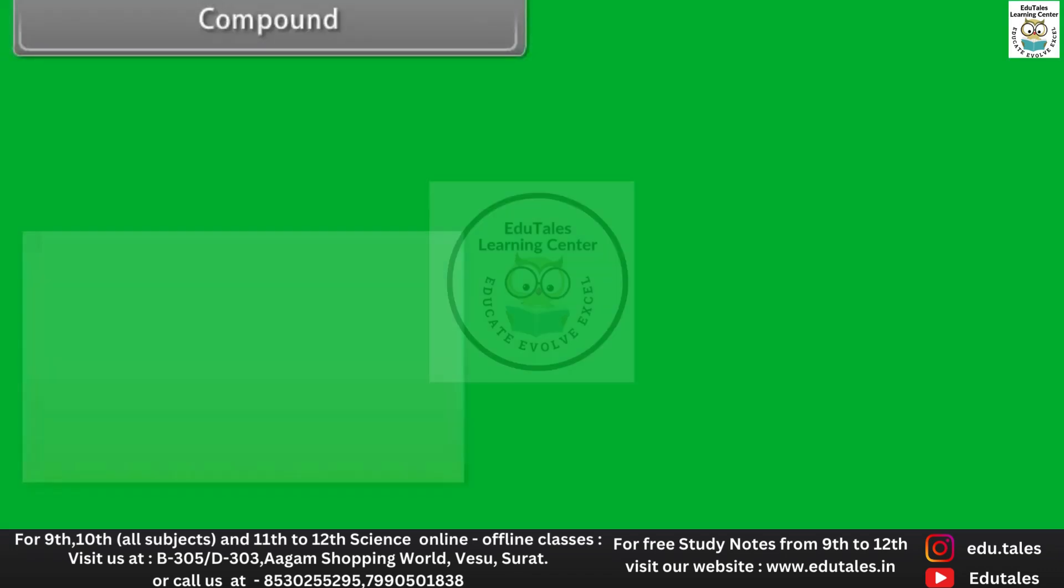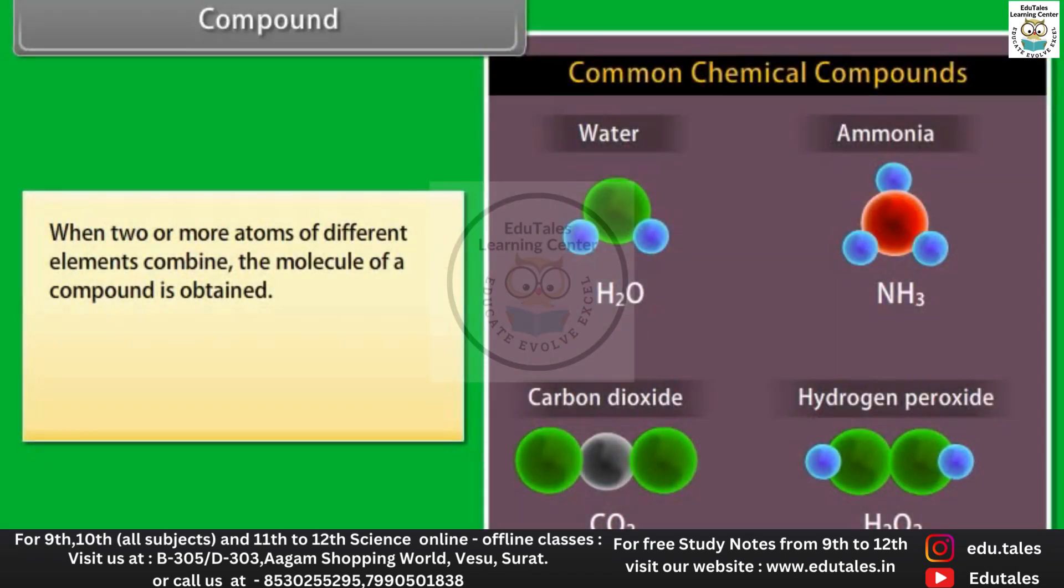When two or more atoms of different elements combine, the molecule of a compound is obtained. The examples of some compounds are water, ammonia, carbon dioxide, sugar.